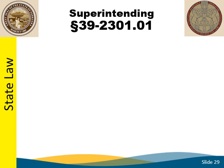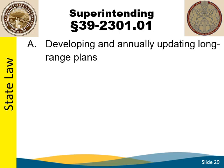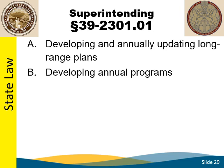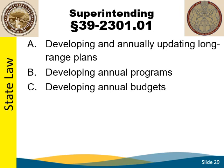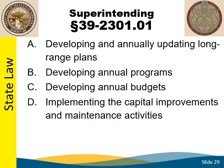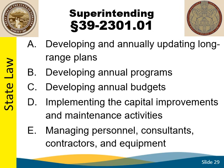From a state law perspective, superintending duties must include developing and annually updating long-range plans based on needs and coordinated with adjacent local governmental units, developing annual programs for design, construction, and maintenance, developing annual budgets based on programmed projects and activities, implementing the capital improvements and maintenance activities provided in the approved plans, programs, and budgets, and managing personnel, contractors, and equipment in support of such planning, programming, budgeting, and implementation of operations. For counties, there are additional references to superintending in Section 15 of Chapter 39.